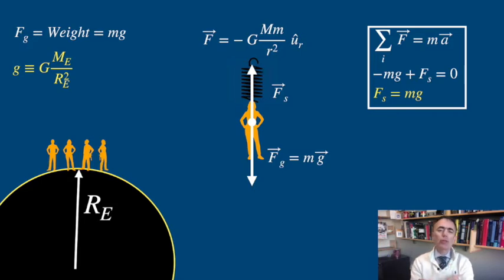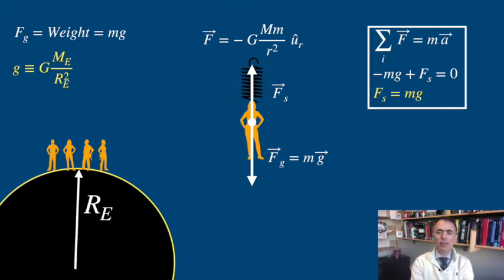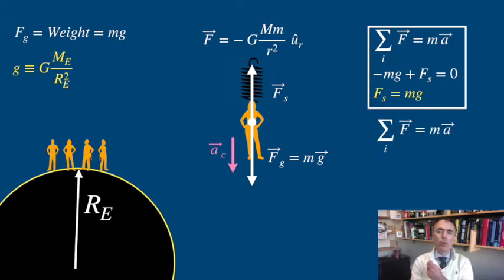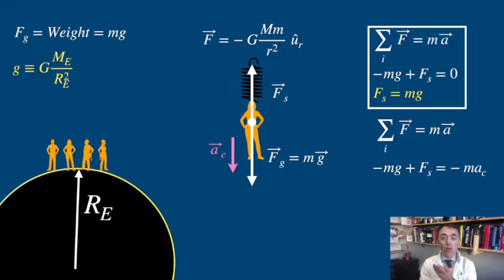Because your trajectory is a circle about the axis of rotation of the Earth, the centripetal acceleration points to that axis, and the net force is equal to your mass times this centripetal acceleration. If you are standing upright at the equator, the centripetal acceleration points downwards. So, force of the spring pointing up minus mg pointing down is equal to your mass times centripetal acceleration.